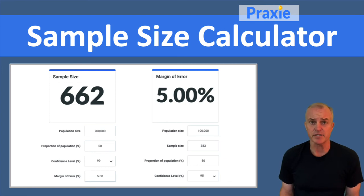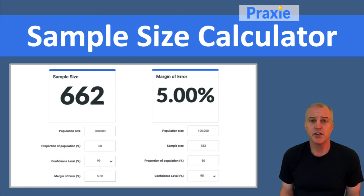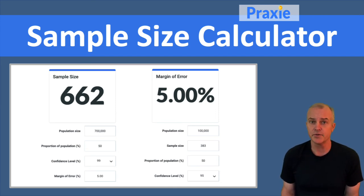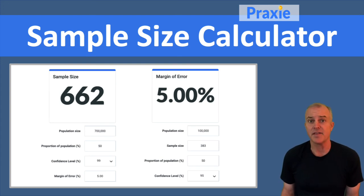A sample size calculator is a simple tool, but an important one. If you're doing any kind of research and you understand the population that you want to research, you ideally want to not sample that entire population — it's probably too big, too costly, and too time-consuming to do so.